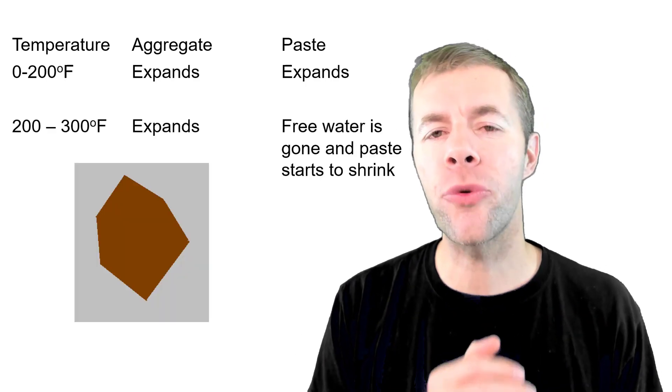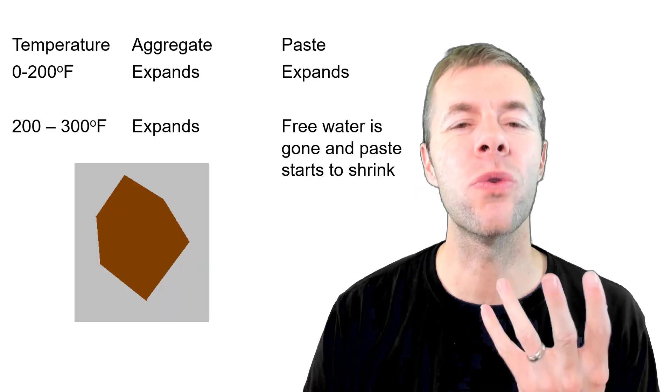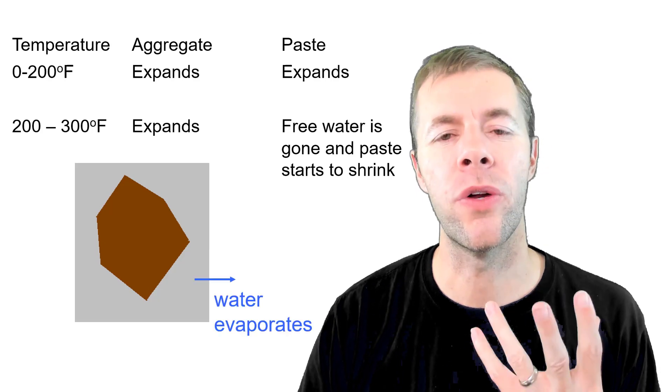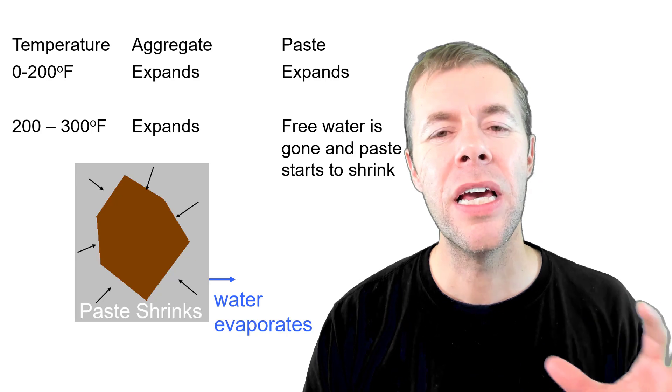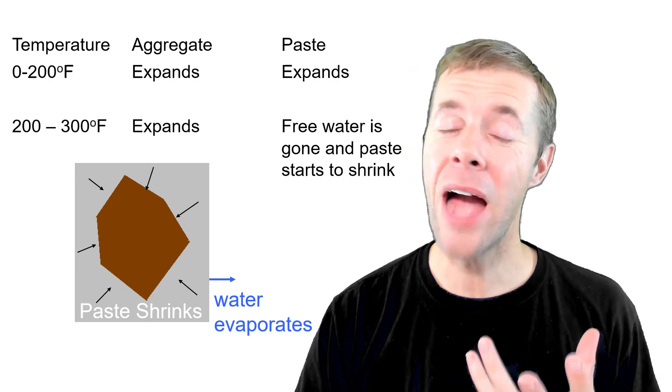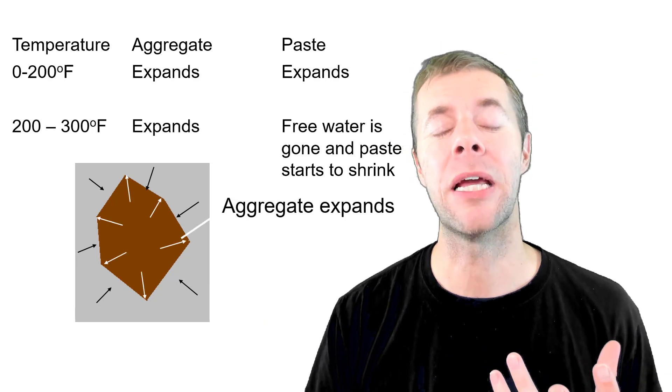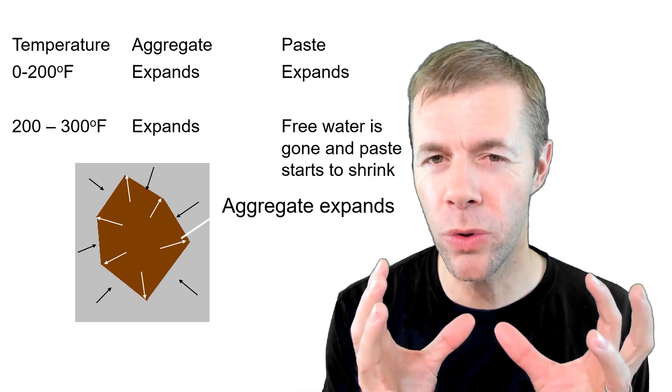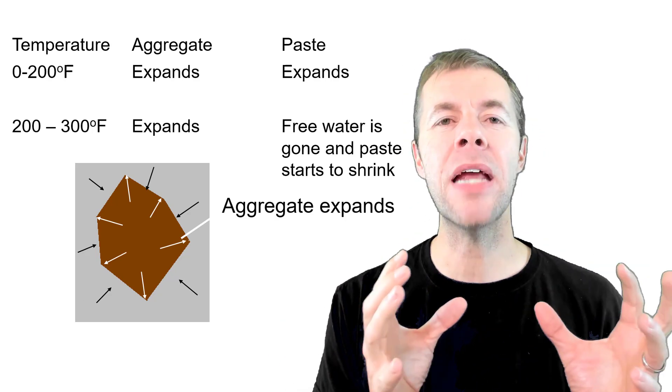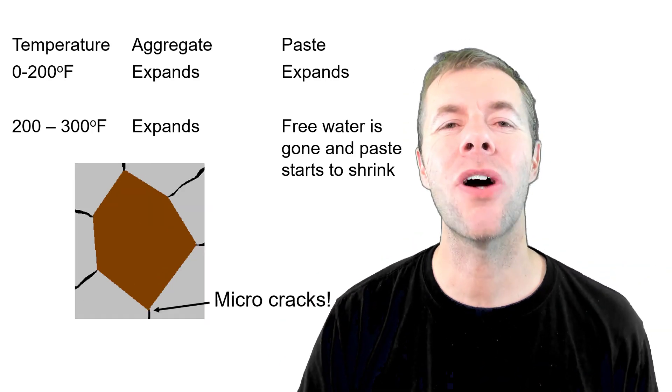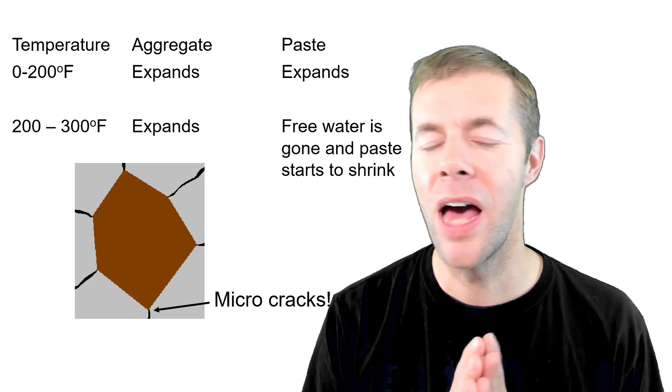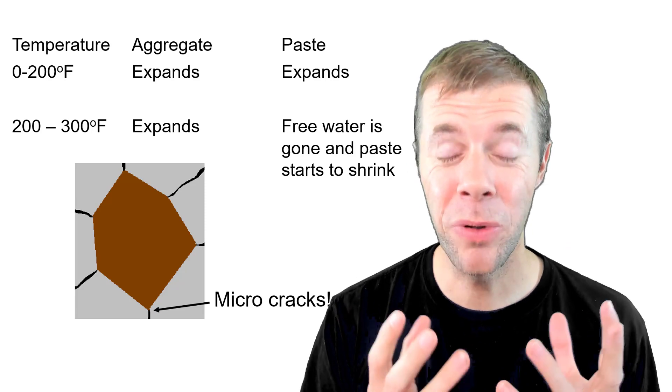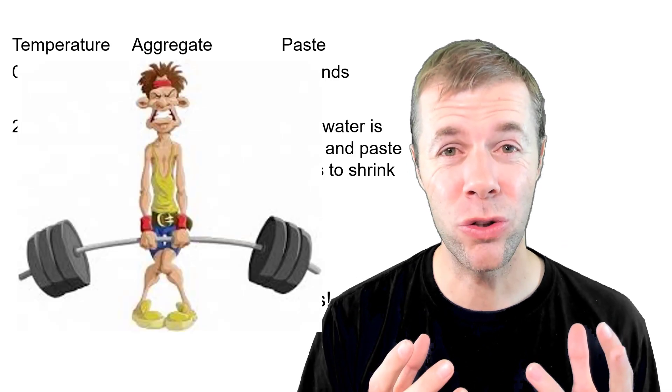But right as you get to about 300 degrees Fahrenheit you actually start to lose all of your water in the concrete and as that water evaporates the paste is gonna shrink and the aggregate is just gonna keep expanding. So you've got the paste shrinking in one direction, you got the aggregate expanding in another direction and it causes micro cracks. It causes these small cracks inside the concrete and as we know cracks aren't good because air is not very strong.